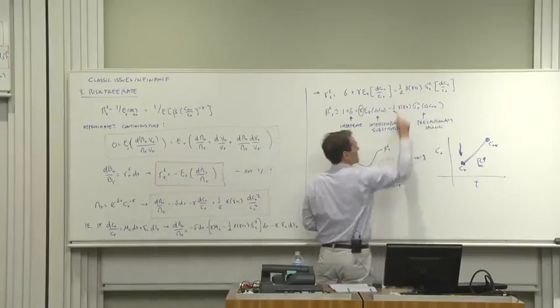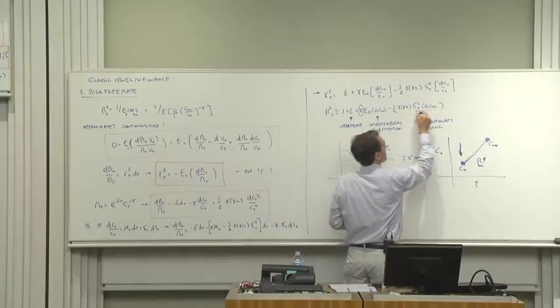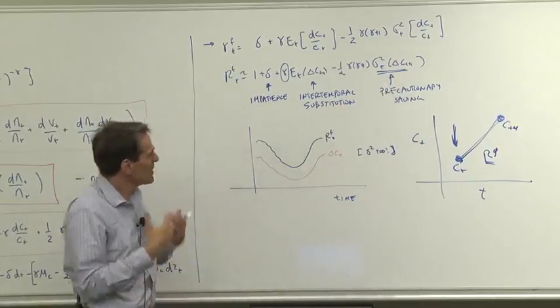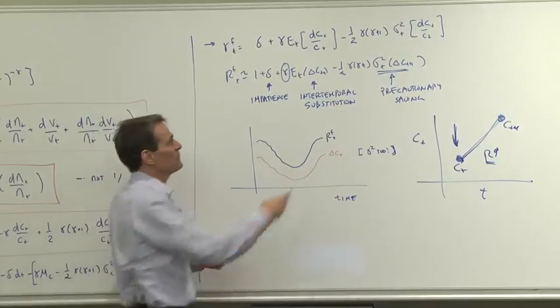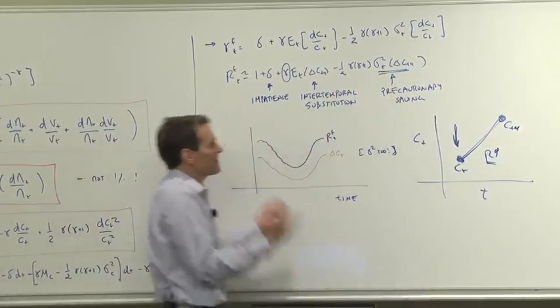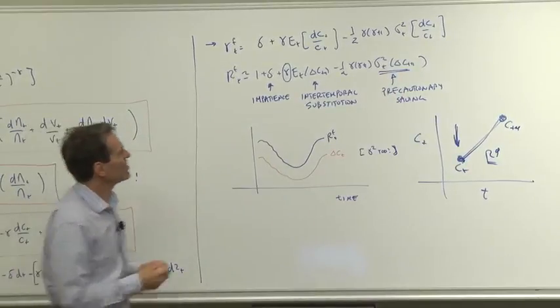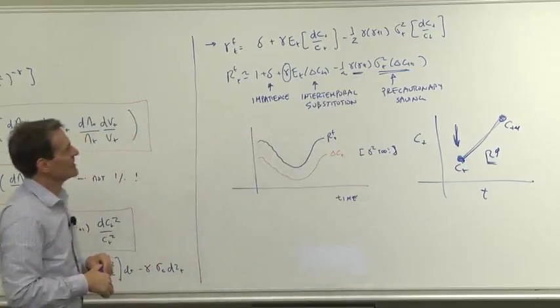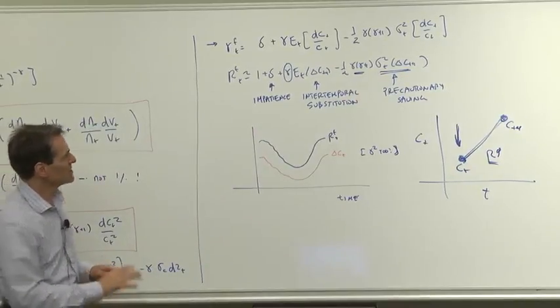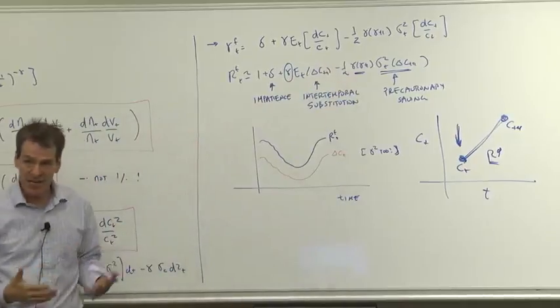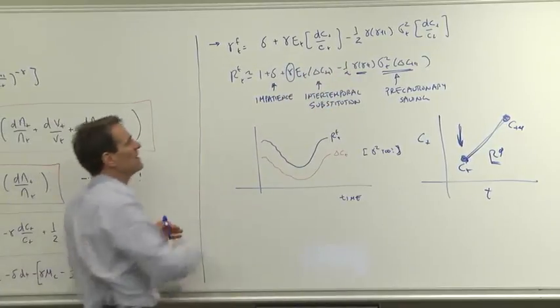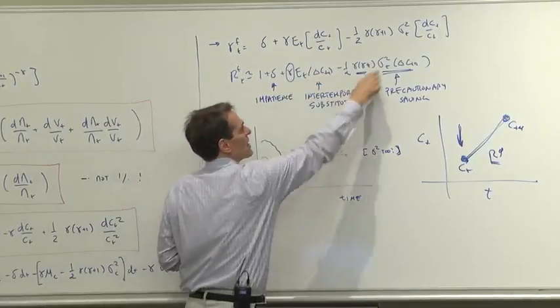The third term is precautionary savings. If you live in an economy with a lot of volatility, a lot of uncertainty, what happens then? Well, if you live in an economy with a lot of uncertainty, people are nervous about the future and they try to save a lot today. If people are trying to save a lot today, that's going to drive down today's interest rates. We're going to have a very low interest rate because everybody's already trying to save. Here the gamma is acting as a risk aversion coefficient. It's telling us how much people react to uncertainty about the future by trying to put it all in mattresses today. You can see gamma has the same coefficient as having two functions here and we'll look later in the course at utility functions that separate those two functions and let people have different responses to consumption over time and aversion to risk.